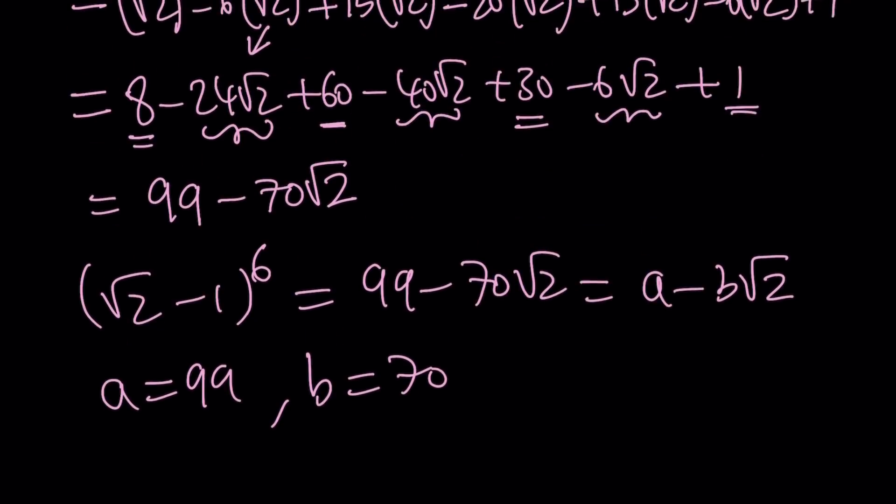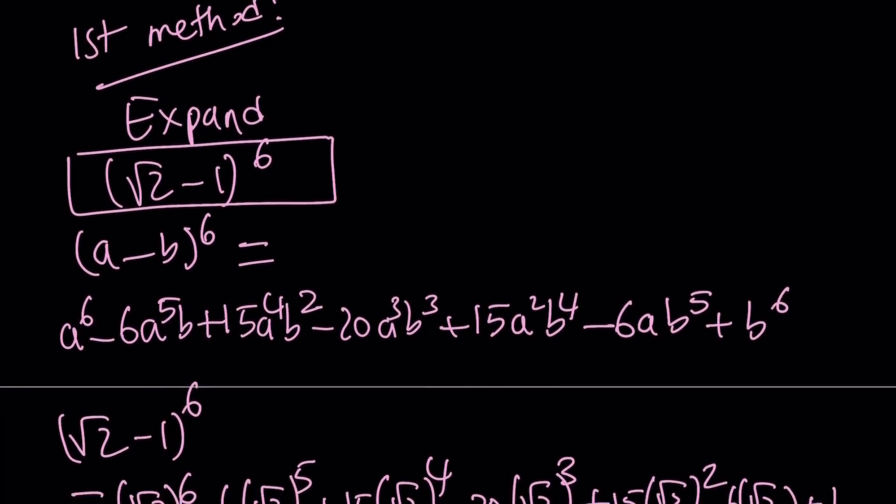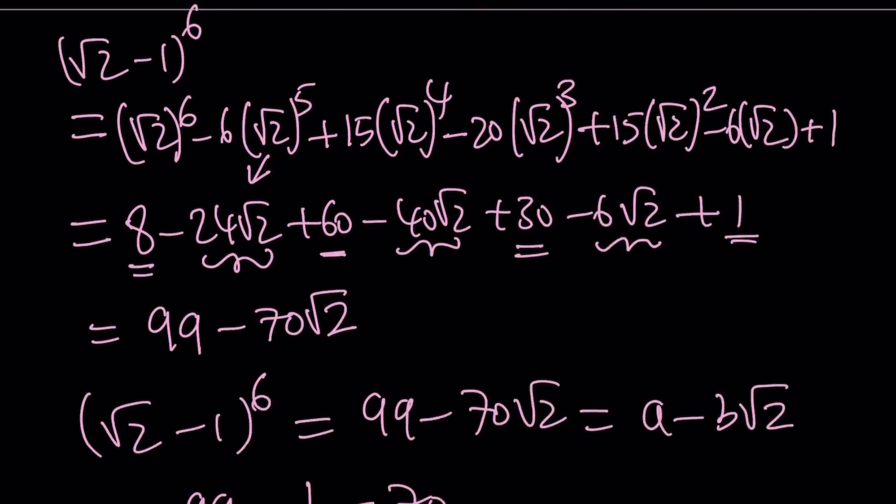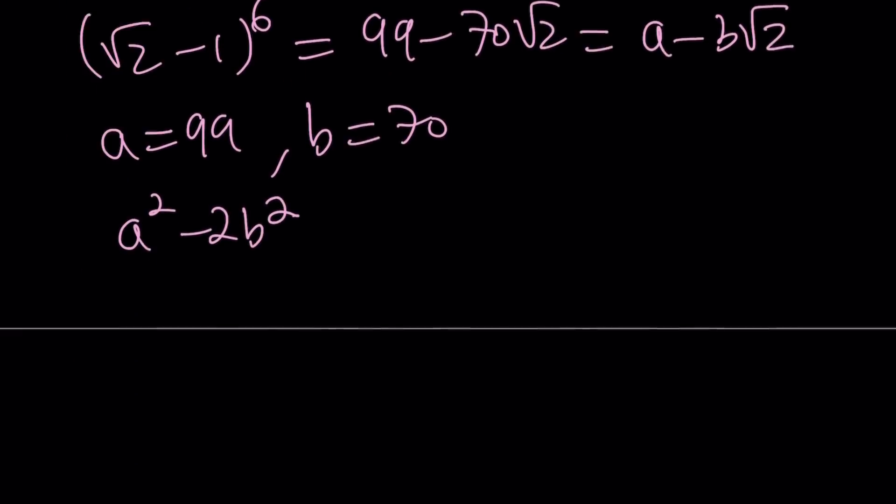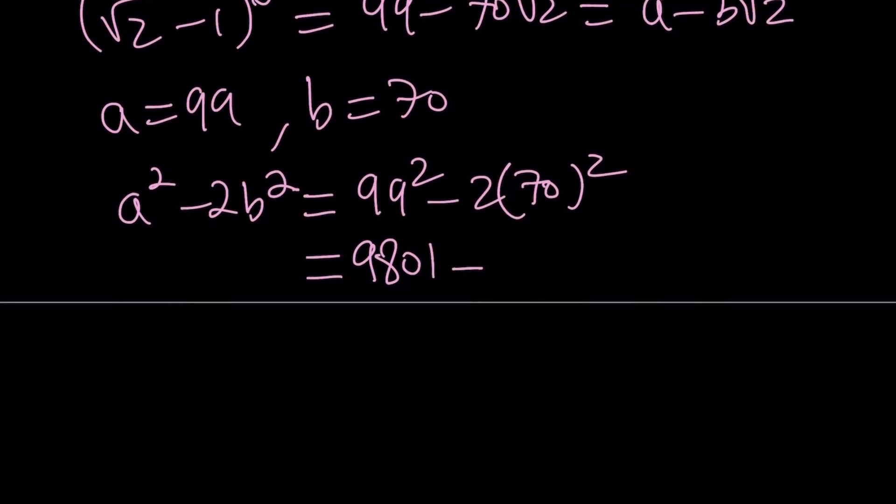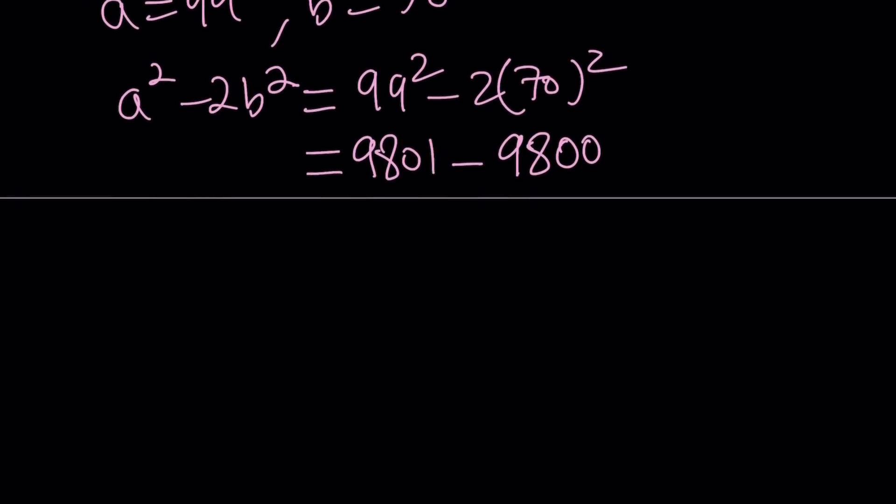And remember, the question was asking for what? The question was asking for A squared minus 2B squared. 2B or not 2B, right? And our expression was given as A minus B root 2. So, how do you evaluate this? You just plug it in, right? It's going to be 99 squared minus 2 times 70 squared. 99 squared is 9,801. You can evaluate it. It's 99 times 99. Or there are some shortcuts. 70 squared is 4,900. Multiply that by 2. You're going to get 9,800. And if you subtract those two values, you get 1. That's kind of interesting, right?